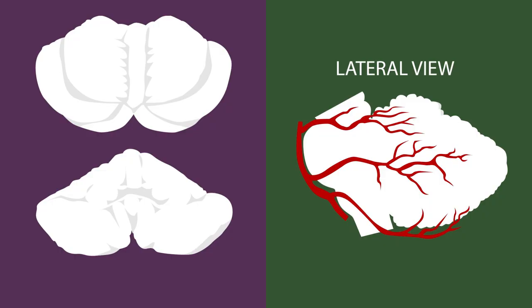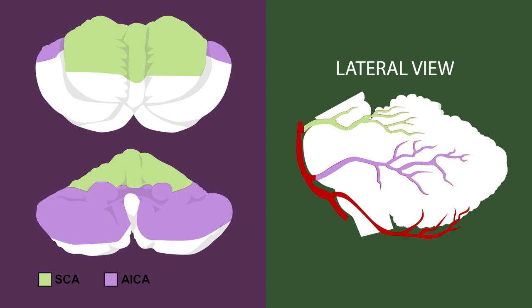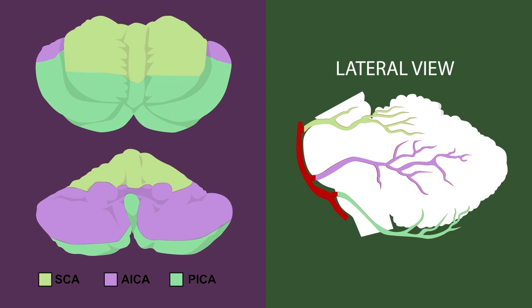Finally, let's examine the blood supply of the cerebellum. There are three main sets of arteries that supply the cerebellum: the superior cerebellar arteries, the anterior inferior cerebellar arteries, and the posterior inferior cerebellar arteries. The superior cerebellar arteries supply the anterior lobe of the cerebellum, while the anterior inferior cerebellar arteries and the posterior inferior cerebellar arteries supply the posterior lobe.